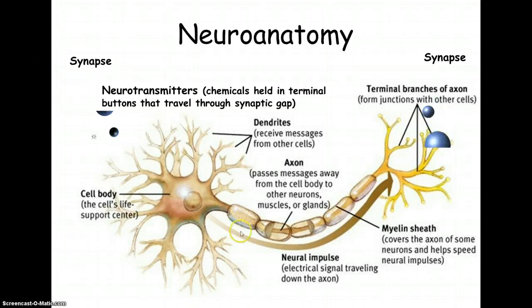Now what's really important here is the myelin sheath. This myelin sheath covers the axon. This is like a fatty coating and the thicker the myelin sheath, the thicker the coating actually speeds up neurotransmission. It helps speed up that neural impulse.